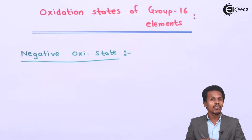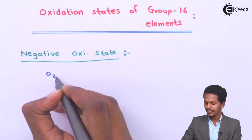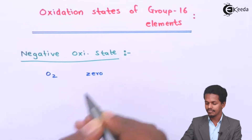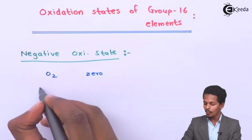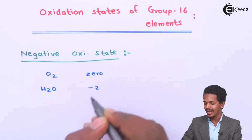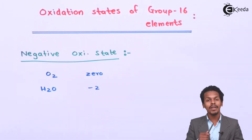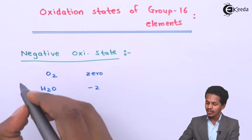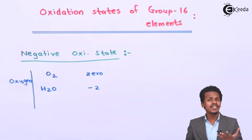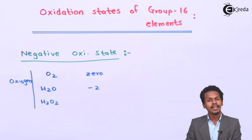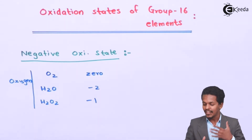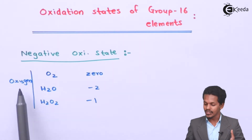If we consider the oxygen molecule O₂, the oxygen will have an oxidation state of zero. But if we talk about a molecule like H₂O, the oxidation state of oxygen is found to be minus 2. Since oxygen is more electronegative, the common oxidation state of oxygen is minus 2. And if we consider H₂O₂, then the oxidation state of oxygen is found to be minus 1. These are the different possibilities of the oxidation state of the oxygen atom.